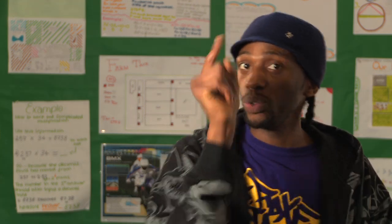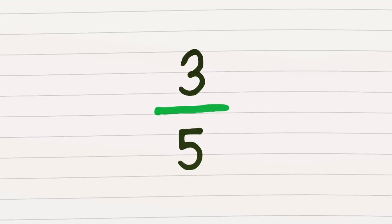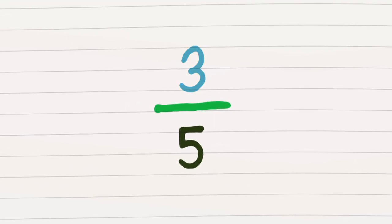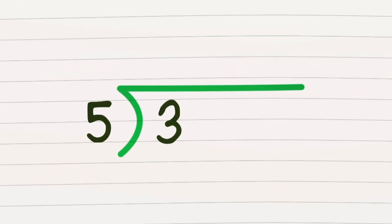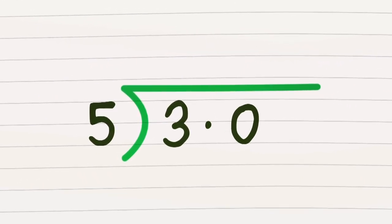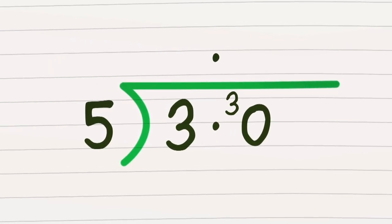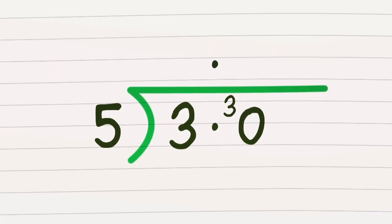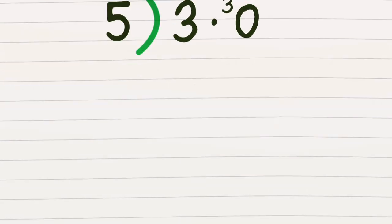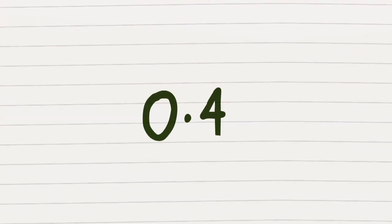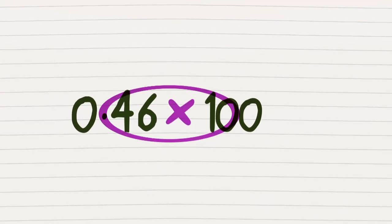If you're looking at a fraction and want to get a decimal, getting to the point isn't really too technical. So let's start by giving three fifths a try — it's like saying three divided by five. Now five doesn't really go into three, but if you tried thirty it'd be easier to see. And now that we know the main number that fits, divide it again to get 0.6.